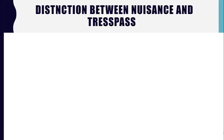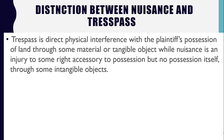Now we have studied trespass, so let us clarify the difference between trespass and nuisance so you don't get confused. Trespass is direct physical interference with the plaintiff's possession of land through some material or tangible object. Nuisance, on the other hand, is an injury to some right accessory to possession, but not possession itself, through some intangible objects. In trespass there is physical interference, while in nuisance there is no physical interference — trespass involves tangible objects, nuisance involves intangible objects.